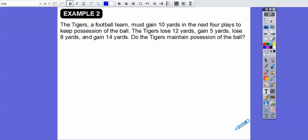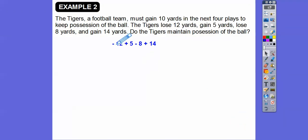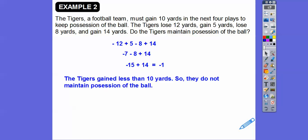Here's the next example. The Tigers, which is a football team, must gain 10 yards in the next four plays to keep possession of the ball. They get four plays and they've got to get 10 yards to keep doing another four plays. Here's the first play. The Tigers lose 12 yards. Second play is they gain 5 yards. The third is they lose 8 yards, and then the fourth down, they gain 14 yards. Do they keep the ball? They lose 12 yards, and they gain 5 yards, they lose 8 yards, and they gain 14 yards. Is that enough to get a 10-yard gain to keep possession? Negative 12 plus 5 is negative 7. Negative 7 minus 8 is negative 15. Negative 15 plus 14 is negative 1. The Tigers gained less than 10 yards, so they didn't get to keep the ball.